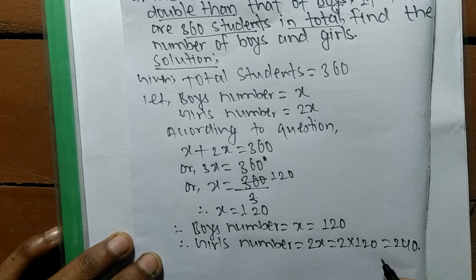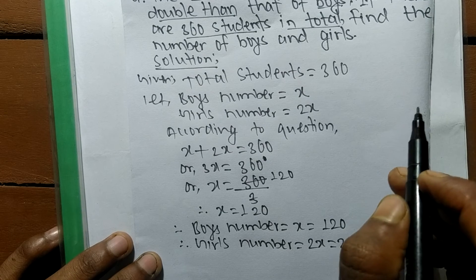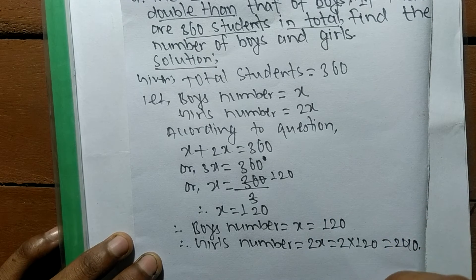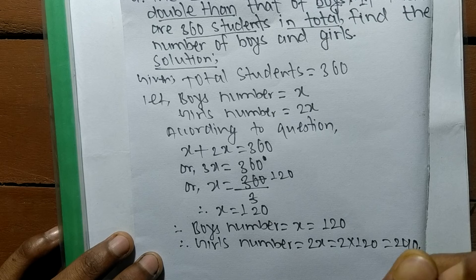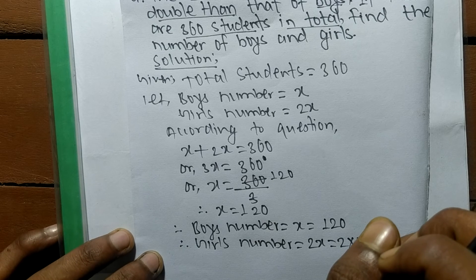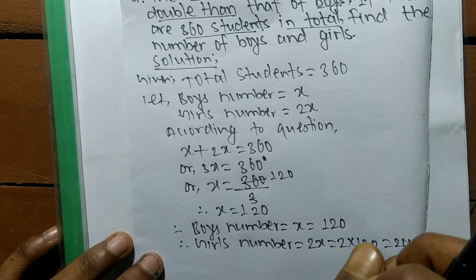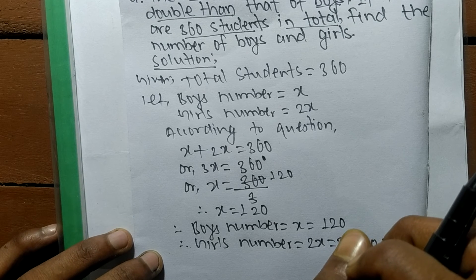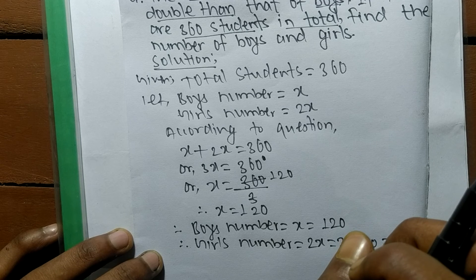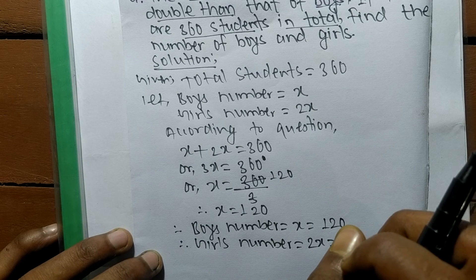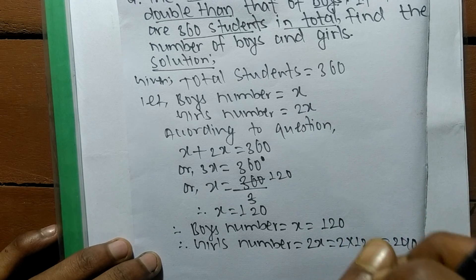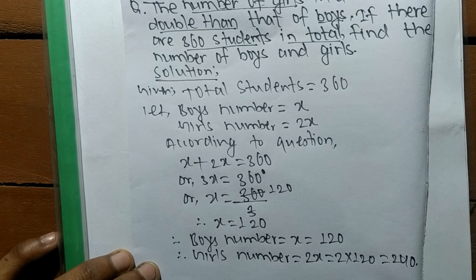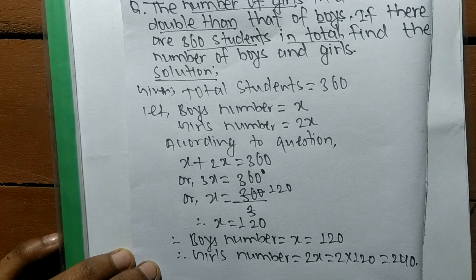So the required number of boys is 120 and the girls are 240. In this way we can solve a problem related to total students and a given condition about boys and girls. Thanks for watching — if you have any questions regarding math and science, comment below and we will provide a video solution.